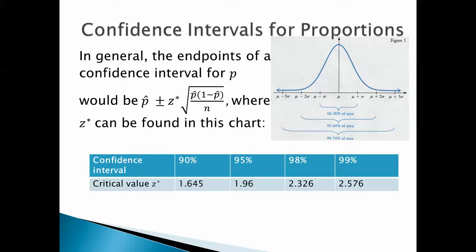In general, the endpoints of a confidence interval for p would be p hat plus or minus z star times the square root of p hat times 1 minus p hat all over n, where z star can be found in this chart.